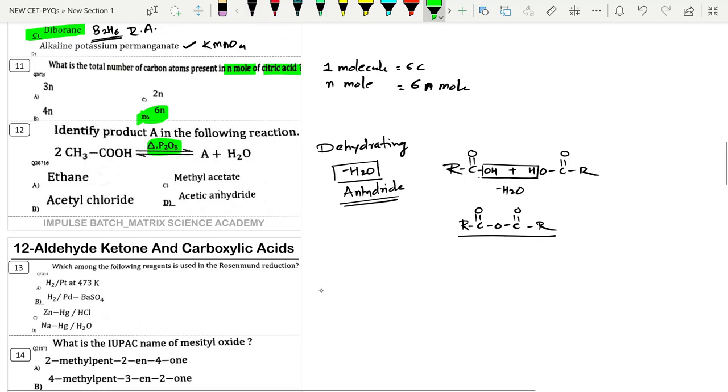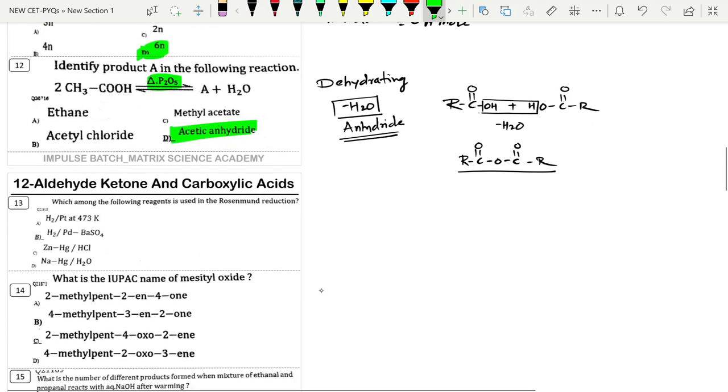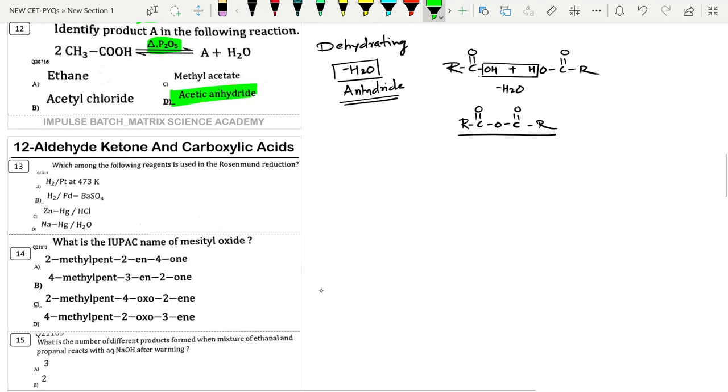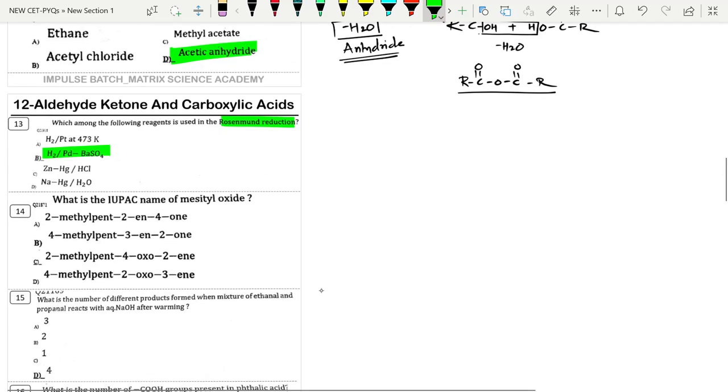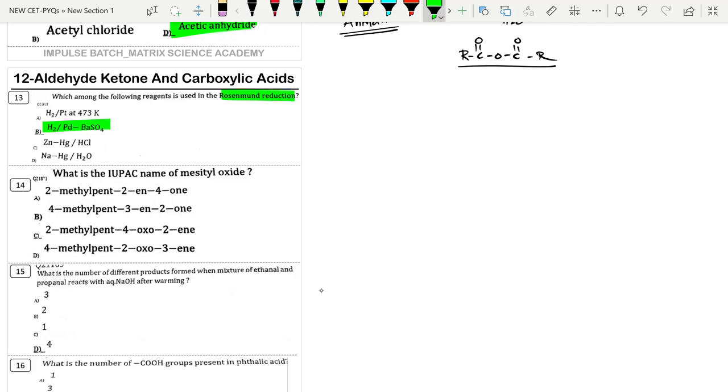Which among the following reagent is used in Rosenmund reduction? It is H2-Pd-BaSO4. In Rosenmund reduction, we do partial reduction of acid chloride to aldehyde, then hydrolysis of cyanide to aldehyde.